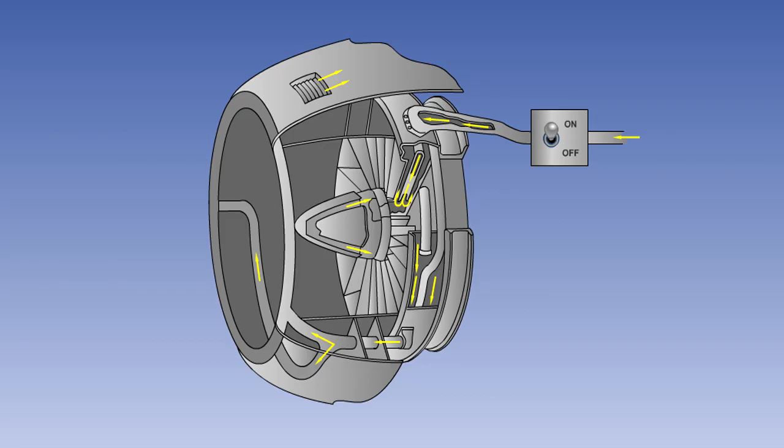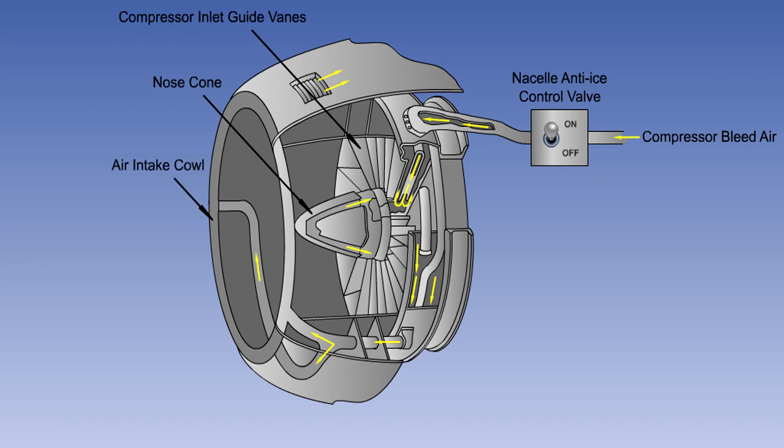A typical hot air engine ice protection system is shown here. The air is tapped from the compressor at a suitable point. It passes through an electrically operated control valve which is actuated by a switch on the flight deck. The air heats the inlet guide vanes, the nose cone, and the air intake cowl. The air is then exhausted either to atmosphere or back into the air intake.